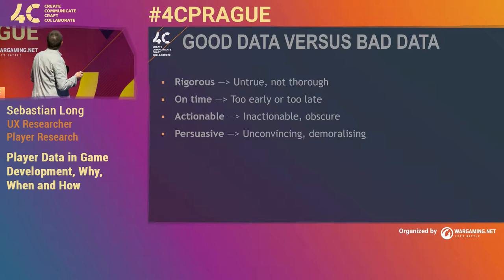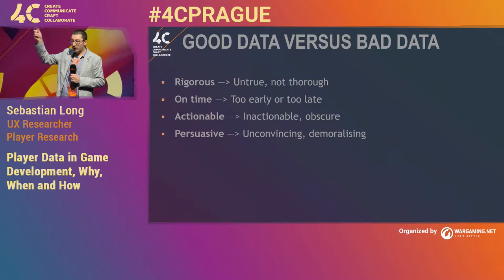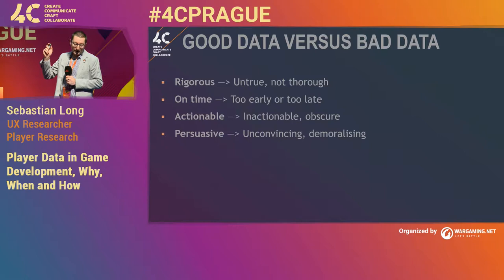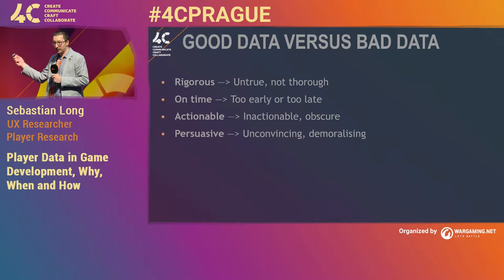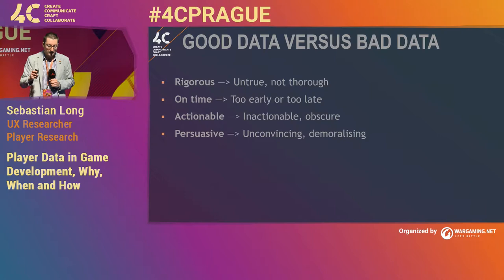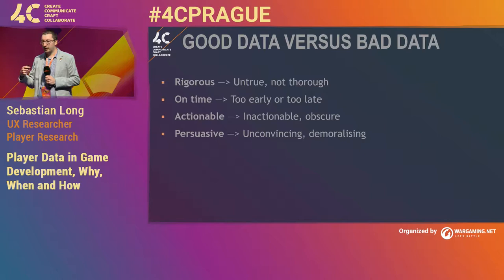When you're designing a plan for how to get data into your development process, these are four words that go at the top of the page, double underlined — because if you're not thinking about these four criteria at every stage of your data gathering, you're gathering bad data that's going to make your game worse. Each of the methods — maybe 25-plus methods — has strengths and weaknesses against these four metrics: rigorousness, on time, actionable, and persuasive.